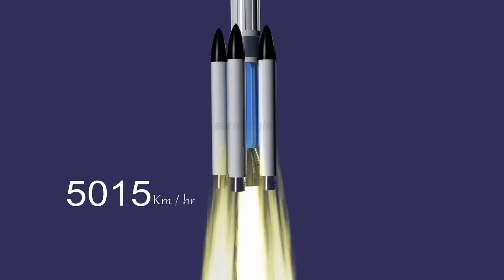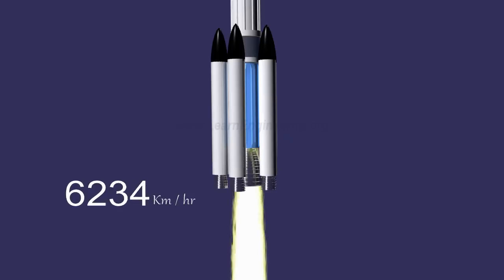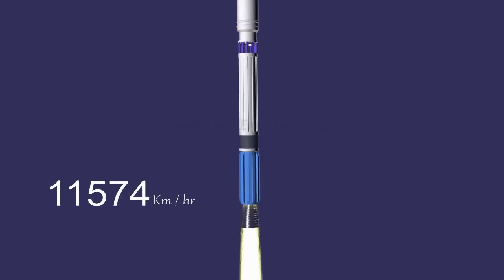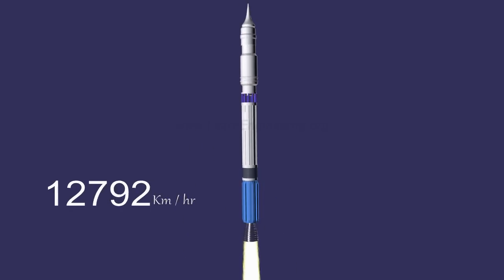The solid propellant strap boosters are burned off very rapidly. So to reduce the weight of the rocket, they are abandoned after the burn-off. This process is known as rocket staging.